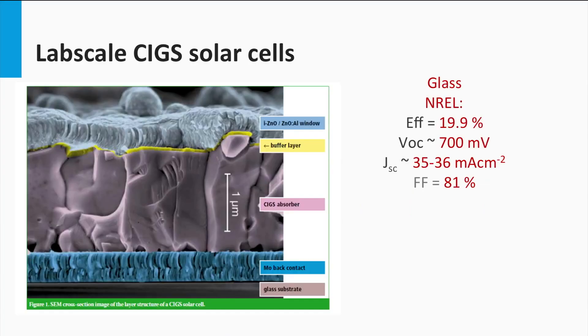An important advantage of the CIGS PV technology is that, on lab scale, it has achieved the highest conversion efficiencies among the thin film solar cells. Lab scale CIGS solar cells processed on glass have a record efficiency of 19.9% as achieved by National Renewable Energy Lab in the US.